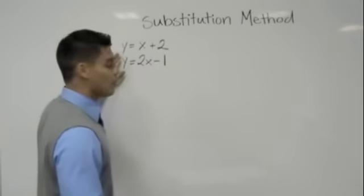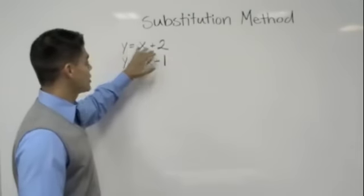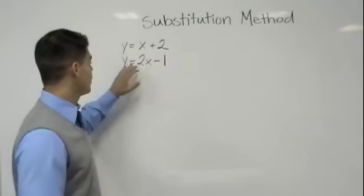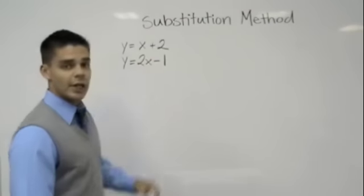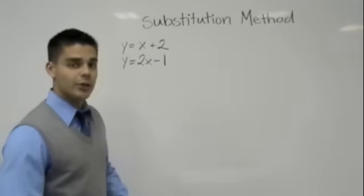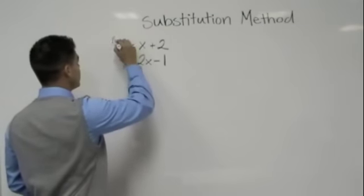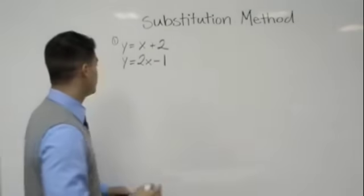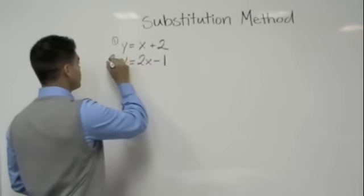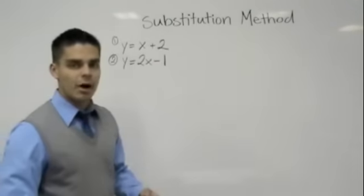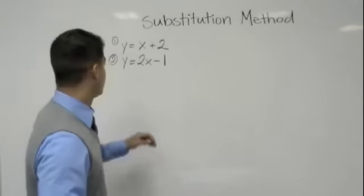As we can see here, we have y = x + 2 in the first equation, then we have y = 2x - 1. The first thing I always like to do is number my equations. Call the first one equation 1 and the second one equation 2. It allows me just to think about it as a number. So here we go.